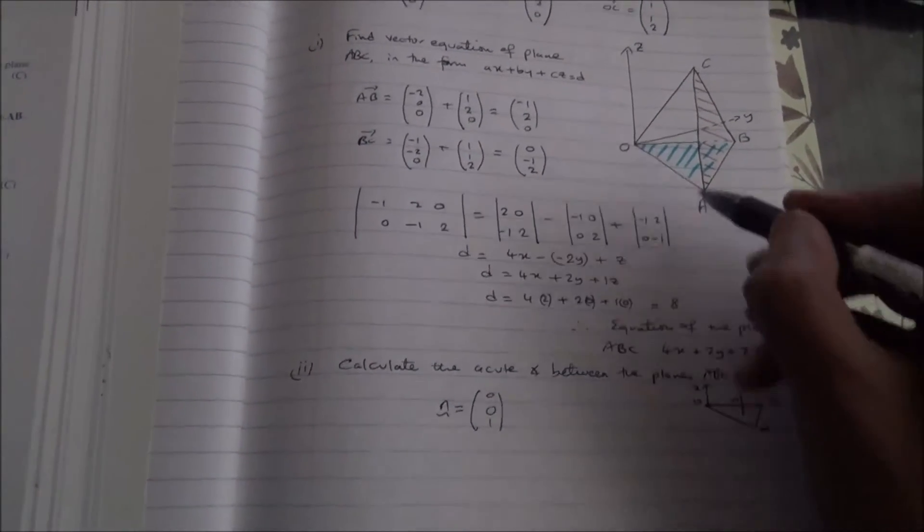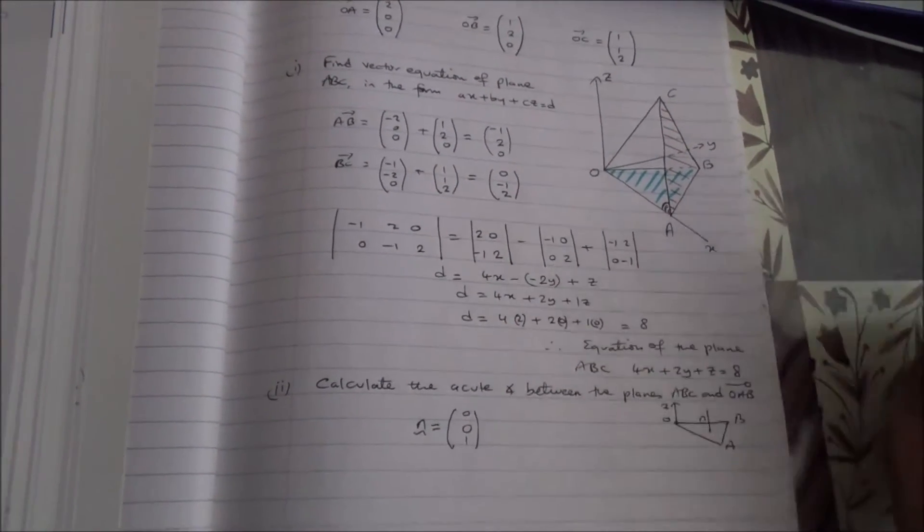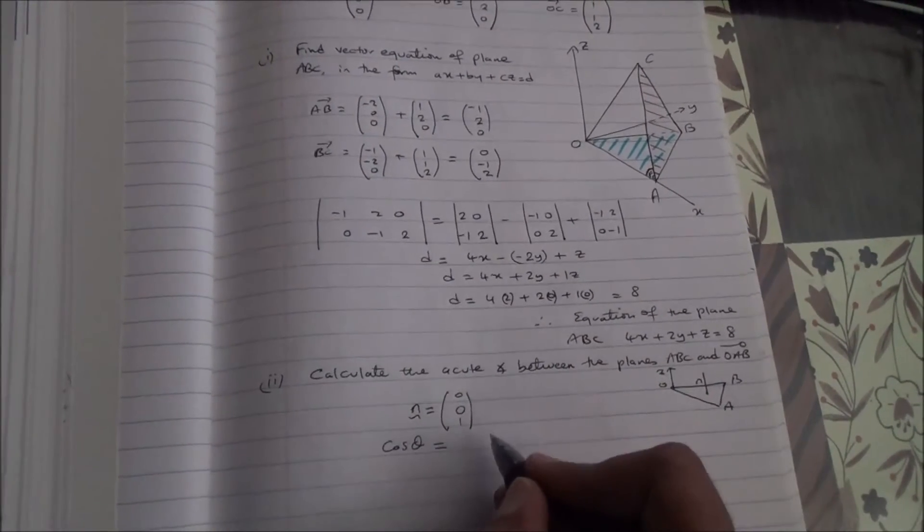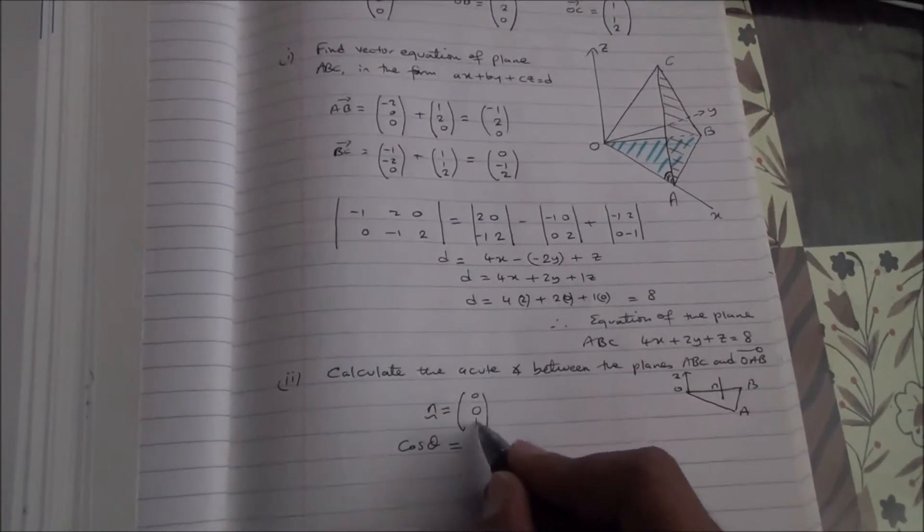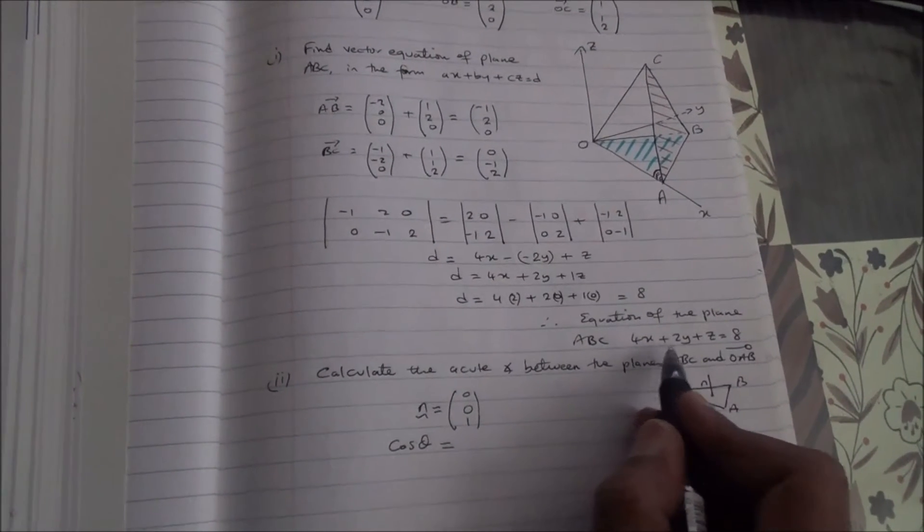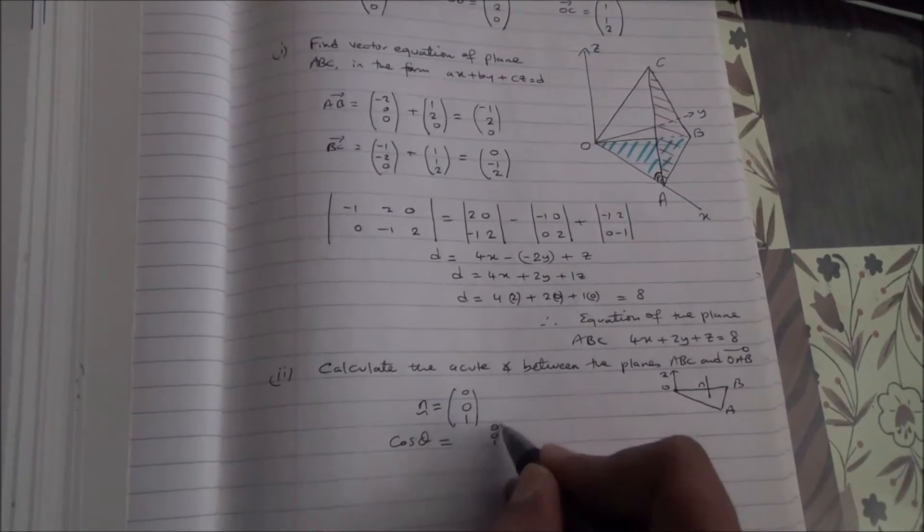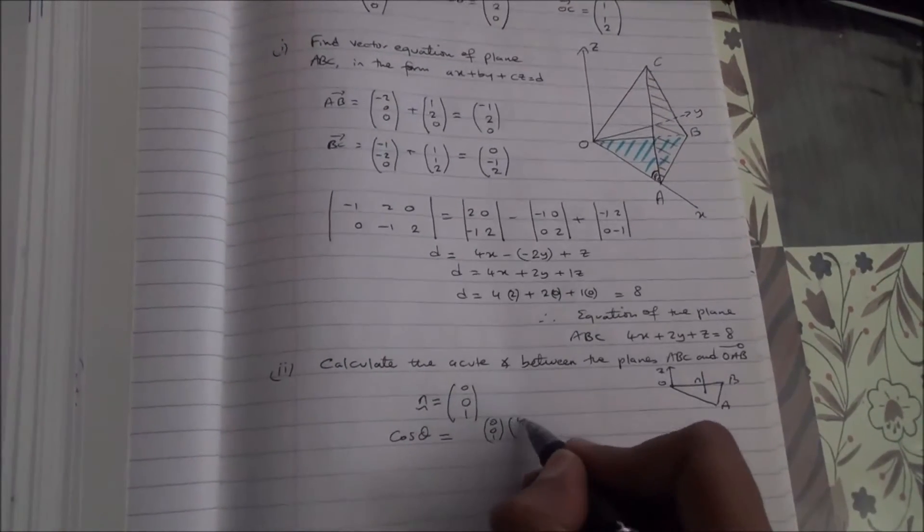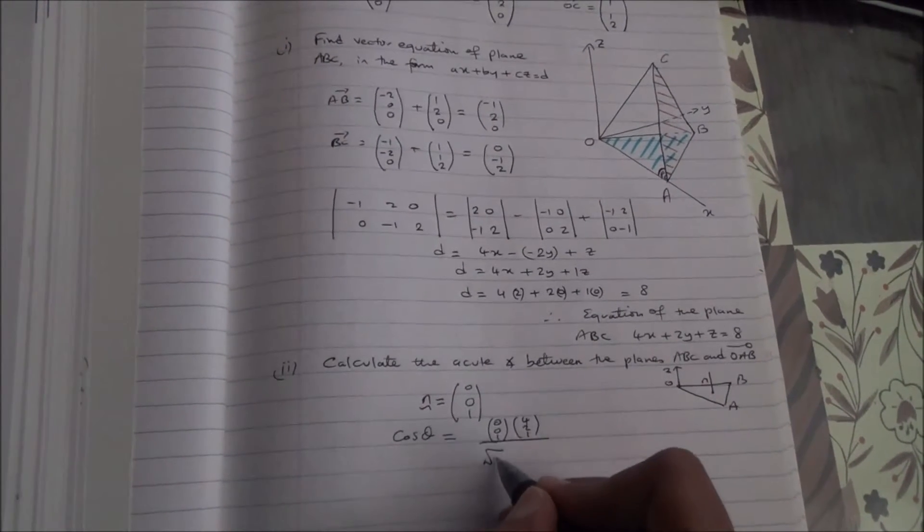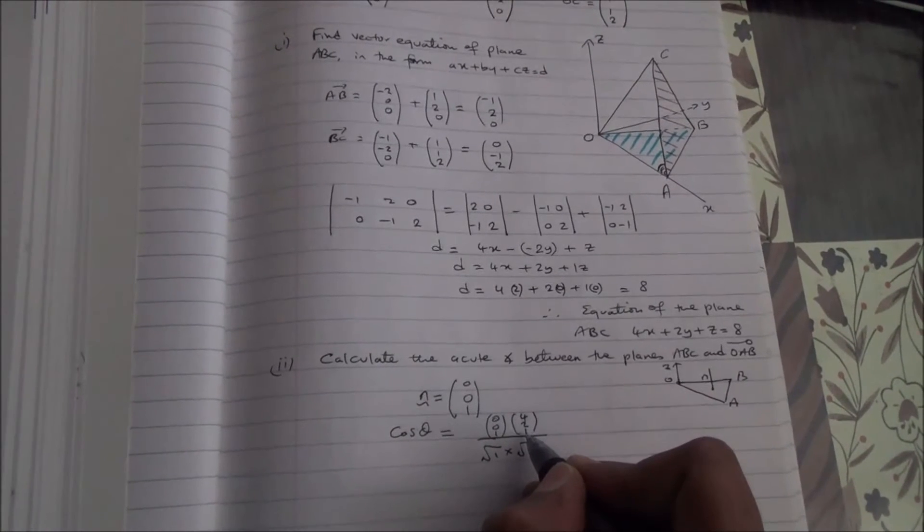So, we need to find the angle between this plane and the other plane, the angle here perhaps. So, how we're going to do this, we're going to say, cos of theta is going to be equal to dot product these two vectors, the normal vector with the normal to the plane ABC. That's going to be, then, 0, 0, 1 times 4, 2, 1, and all divided by the square root of 1 times the square root of 4 to the square plus 2 to the square plus 1 to the square.